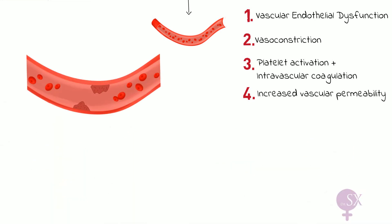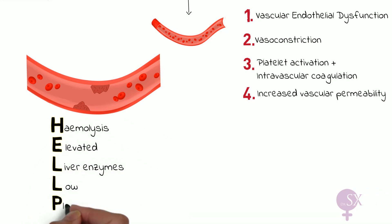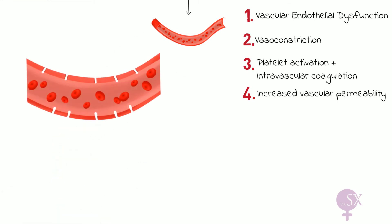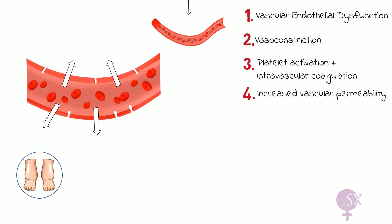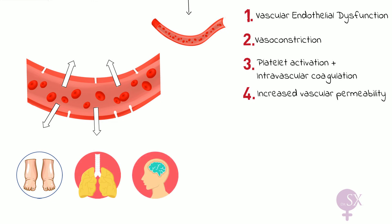Endothelial cell dysfunction also results in the development of small thrombi within the blood vessels. The formation of thrombi uses up a large number of platelets, and the thrombi also cause hemolysis as red blood cells are destroyed upon hitting them. This is the basis of HELLP syndrome: hemolysis, elevated liver enzymes, and low platelets. Finally, endothelial cell dysfunction results in increased vascular permeability, allowing fluid to escape into the tissues, resulting in generalized edema in the legs and face, pulmonary edema, and cerebral edema.